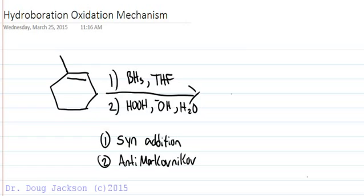So when we predict the product, let's draw our cyclohexane ring first. We are going to add from the top, pushing the methyl away from us while adding the OH toward us after the mechanism is complete.